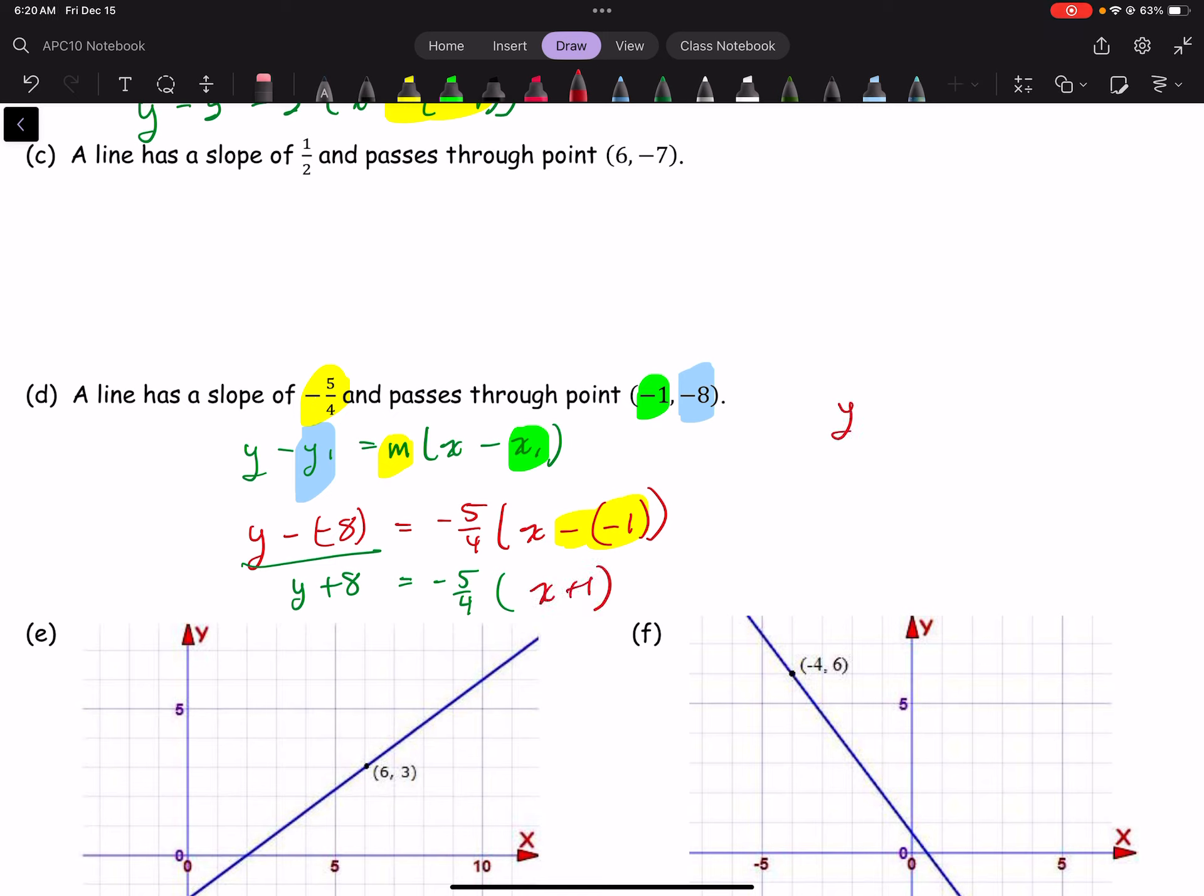So the equation is y plus 8 equals negative 5 over 4 x plus 1. Now, notice how my slope was negative. It remained the way it was. But, my x value, pardon me, that was a huge miss on my half. The x value was negative 1, but it appears in the equation as x plus 1. Same with the y value. It's negative 8, but it appears as y plus 8.